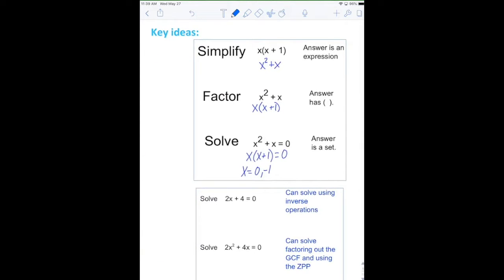Here's some key ideas. When we simplify, we double distribute. When we factor, we separate everything into a product of parentheses. And when we solve, we get an actual solution. Our goal is going to be to factor in order to solve.